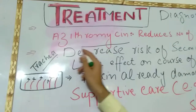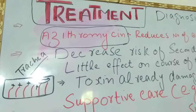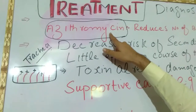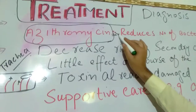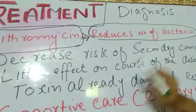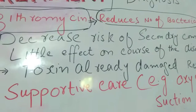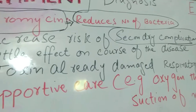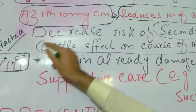The drug of choice for the treatment of Bordetella pertussis is azithromycin. Azithromycin is an antibiotic and protein synthesis inhibitor. It reduces the number of bacteria, which decreases the risk of secondary complications. However, it is important to know there is little effect on the course of the disease.